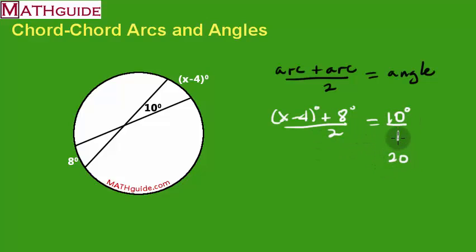So, I'm going to cross multiply. I'm going to get 2 times 10 is 20. X minus 4 plus 8 times 1 is still the same, X minus 4 plus 8.